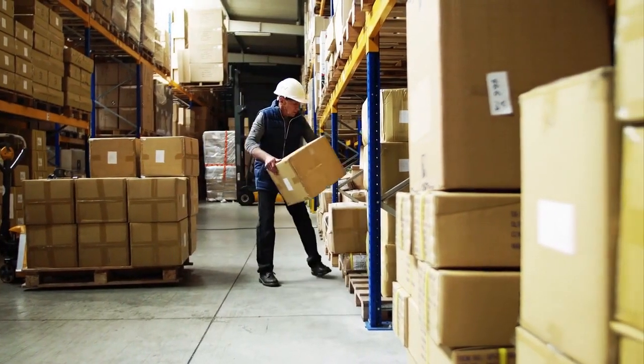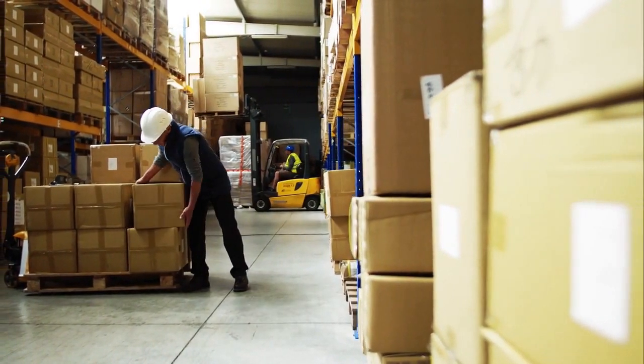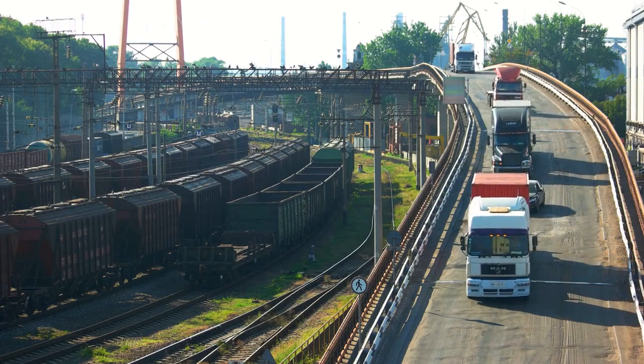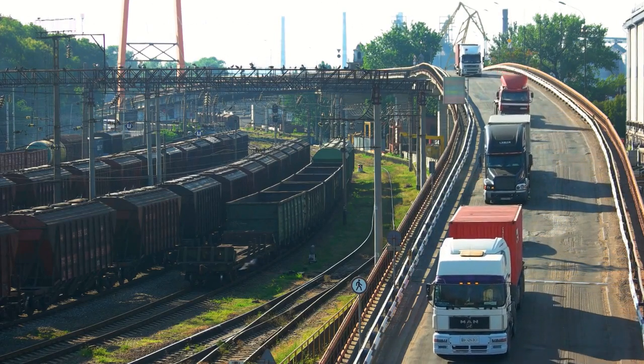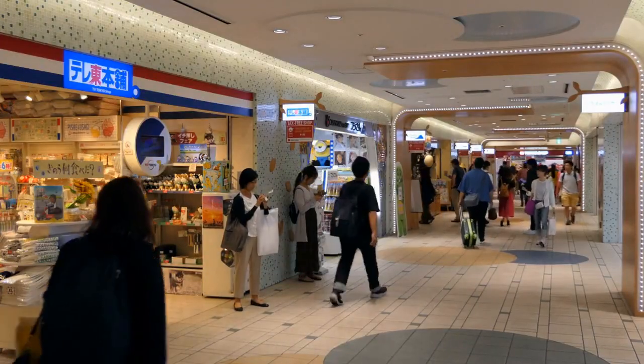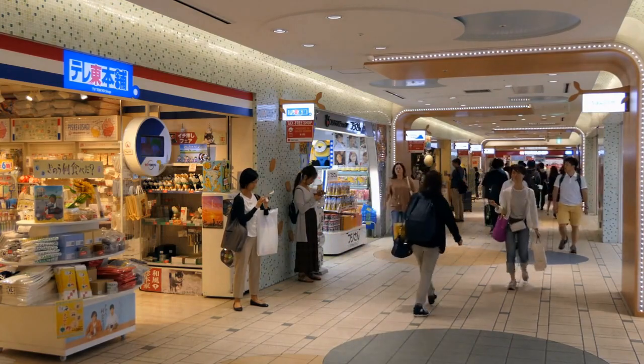After the calculators are packaged, they are loaded onto pallets and transported to the shipping area. From there, they are loaded onto trucks and shipped to retailers and distributors all around the world. Casio has a global distribution network and their calculators can be found in stores in nearly every country.